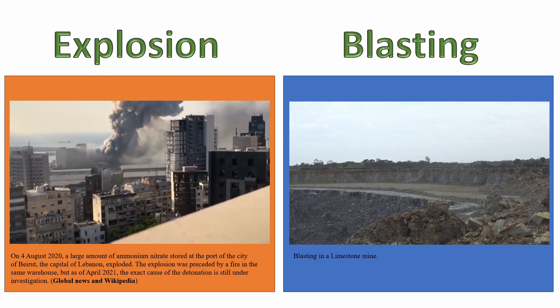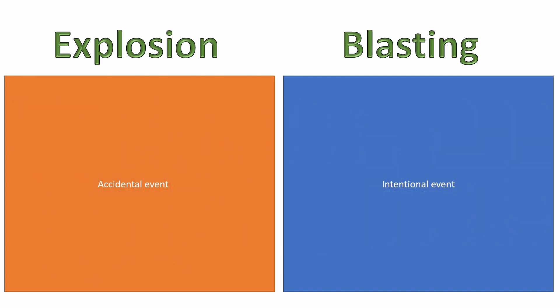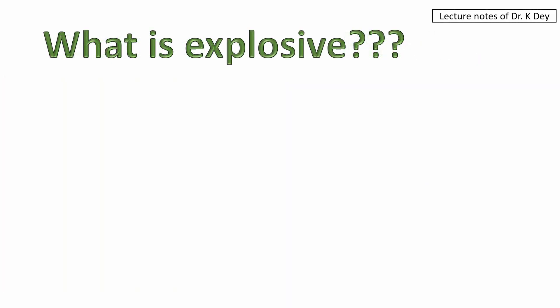We can say that the first one was an accidental event — an unintentional event — and the second one was an intentional event. We normally use the term 'explosion' to refer to an accidental event, like 'there was a gas explosion on the highway.' We normally use the term 'blasting' to define an intentional event, like blasting done in the field to extract rock mass. In both cases, the explosive is the prime cause for the blasting or explosion.